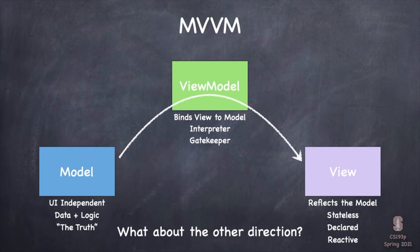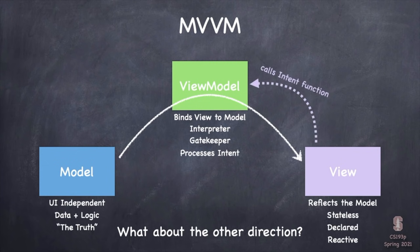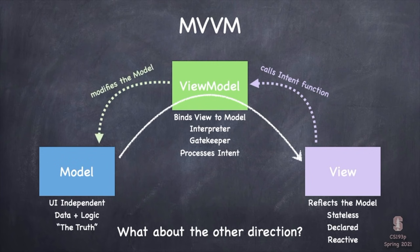What about the other direction? How does the model get changed by touch events happening in the view — taps, swipes, navigating around in the UI? We handle that by adding another responsibility to the ViewModel: processing user intent. Users are essentially expressing their intentions to change the model through these touch events. So we add functions to our ViewModel which allow the view to say the user just did something, and by doing so she intends a conceptual thing to happen in the model.